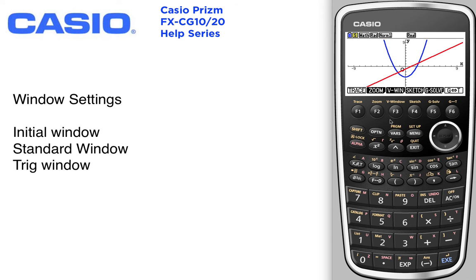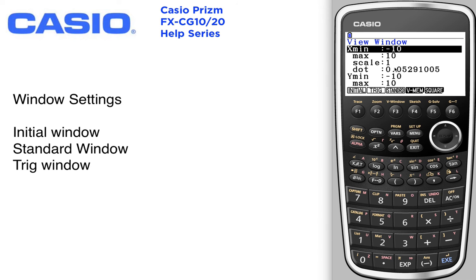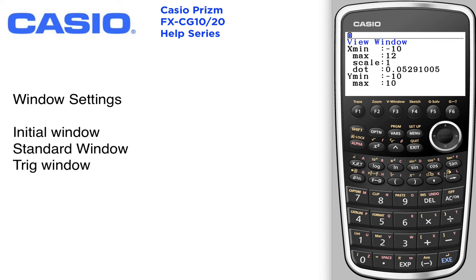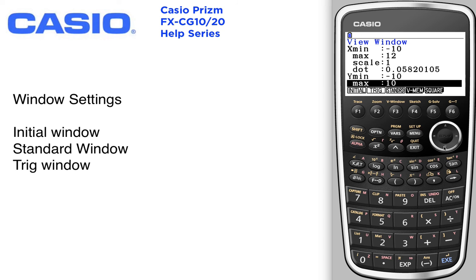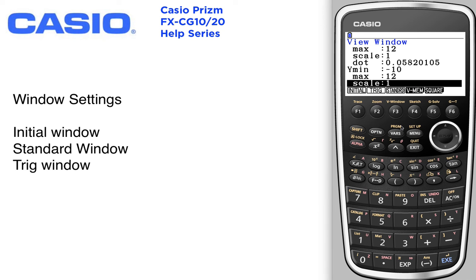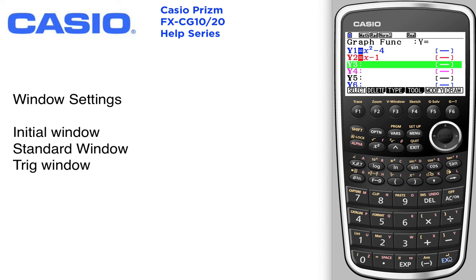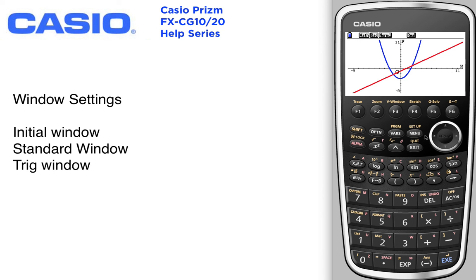The other thing you can do from the view window is also set those up yourself. You could change any one or all of the parts — just scroll down and press enter. Once you press enter on it, it will go ahead and change the window, and then you graph and you get the new window.